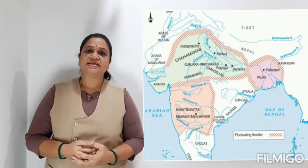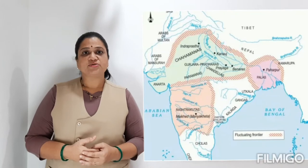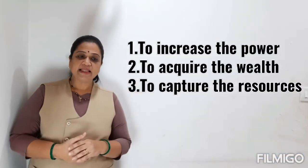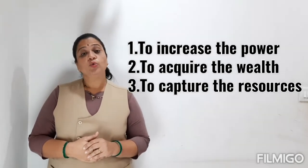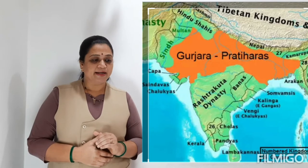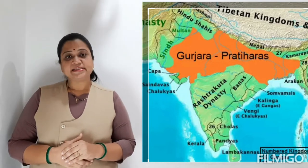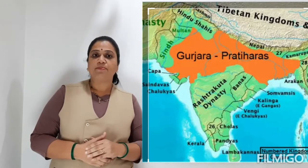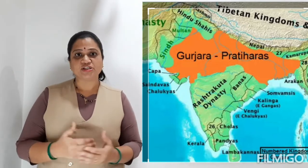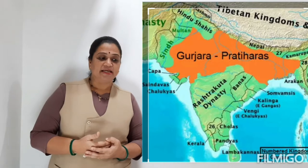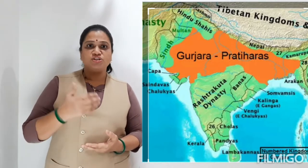Why did these dynasties try to expand their region? First, to increase their power; second, to gain and acquire wealth; and third, to capture resources. For example, the Gujara Pratihara dynasty overthrew the Rashtrakuta and expanded their territory, increasing their power and gaining wealth because the Rashtrakuta dynasty was very rich in resources.